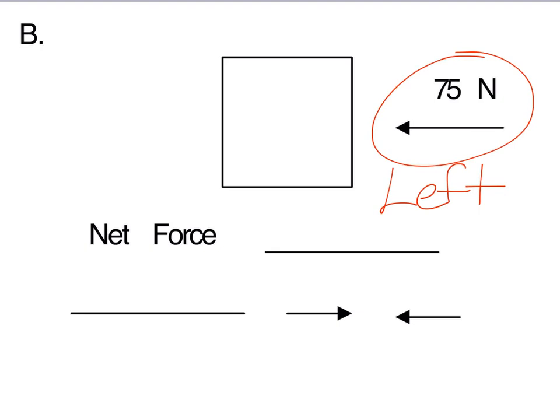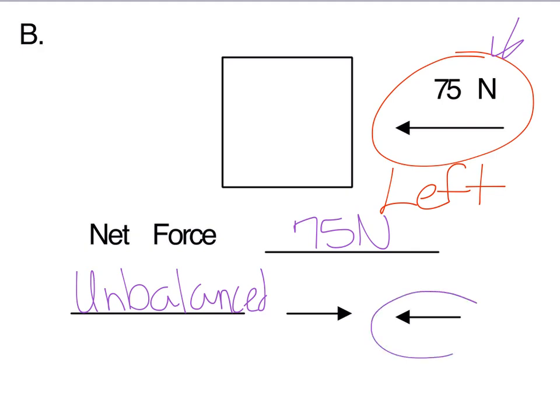So because it's the only one, you already have your net force. So what did you write down for net force? Great job. You should have written down 75 newtons, because again, that's the only force. So since it's the only force, is it going to be balanced or unbalanced? Great job. It's going to be unbalanced. Which arrow did you circle? Great job. You should have circled the arrow going to the left.